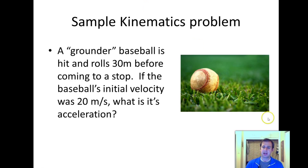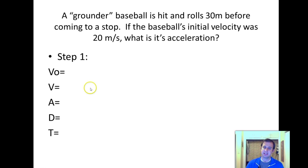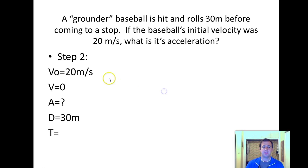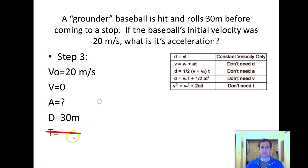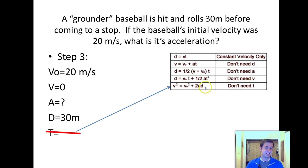First step: we write down V0, V, A, D, T in a vertical column and plug in everything we know. The starting velocity was 20 meters per second, the ending velocity is zero since it comes to a stop, the acceleration is what we're trying to find — so we put a question mark — and the distance traveled was 30 meters. We don't need T, so we cross that off and identify the correct equation: the 'don't need T' equation.